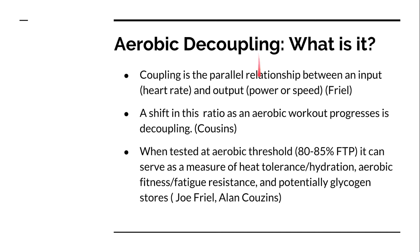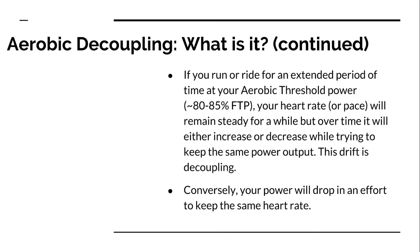A shift in this ratio — meaning heart rate and power start to become non-parallel lines — is aerobic decoupling. When tested at your aerobic threshold, roughly 80 to 85 percent of your FTDP, it can serve as a measure of heat tolerance, hydration, aerobic fitness, fatigue resistance, and even potentially glycogen stores.